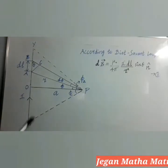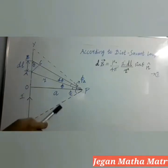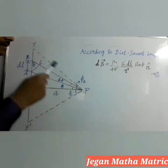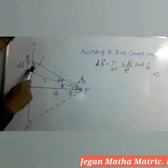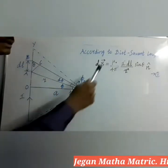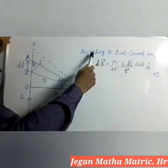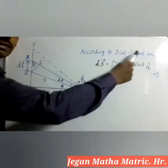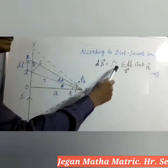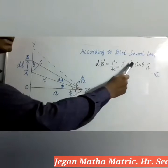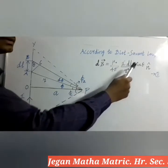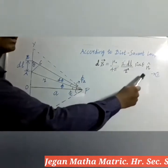The magnetic field at point P due to current element IDL can be calculated from Biot-Savart law. According to Biot-Savart law, dB is equal to μ₀ by 4π times IDL by R² times sinθ times n̂, where n̂ is the unit vector which points into the board at point P as shown here.